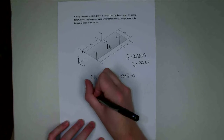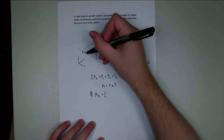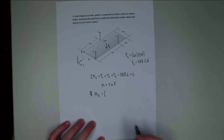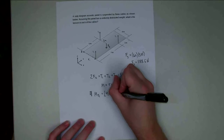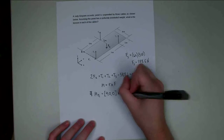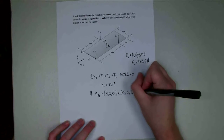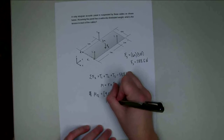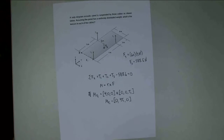Let's look at the moment of T1. That's going to be R cross F. R1 goes from point A out to the cable attachment: four meters in the x direction, zero meters in the y direction, and zero meters in the z direction. The force vector is all in the z direction: (0, 0, T1). Using the cross product, the moment due to tension one is going to be (0, 4T1, 0).